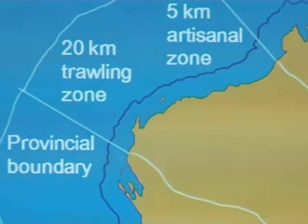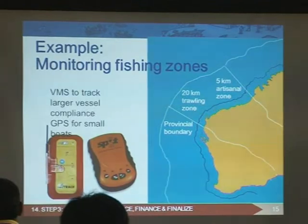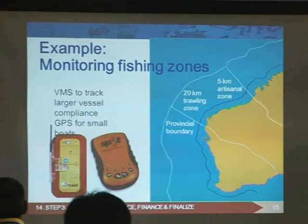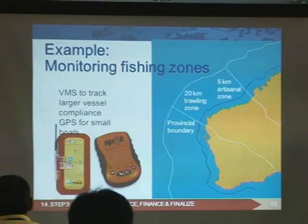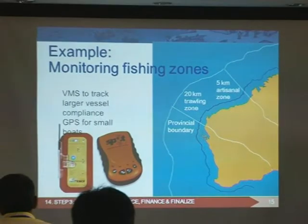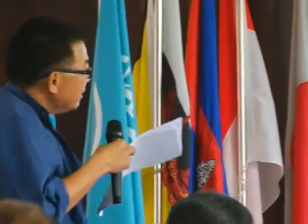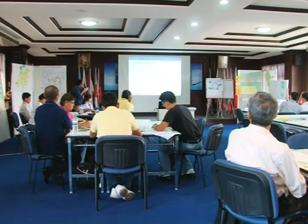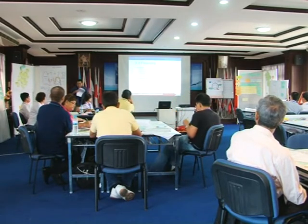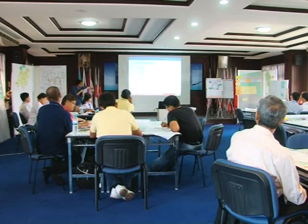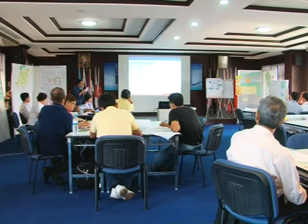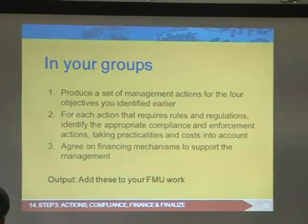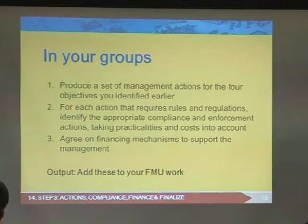Small-scale fishermen will report to the fishing board. Officers can go out and take photographs. When we develop an EAFM plan, we have to consider how to get budget, how much we have to pay, and equity issues for financing. Funding may be part of your annual government budget, or you may need a special budget from your government. For each action, identify the required rules, regulations, compliance, and enforcement actions.